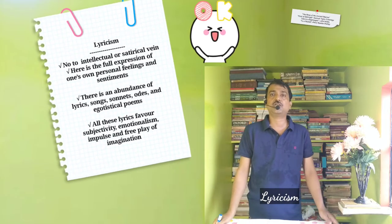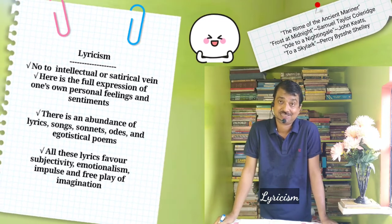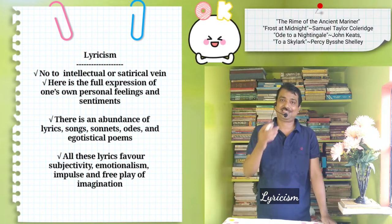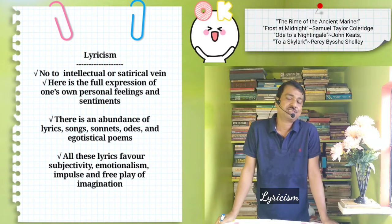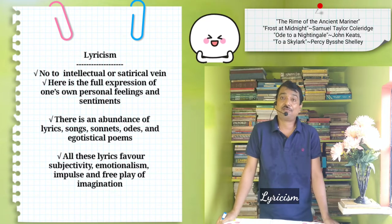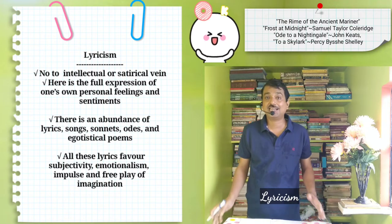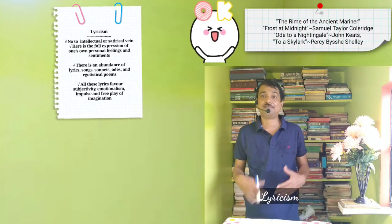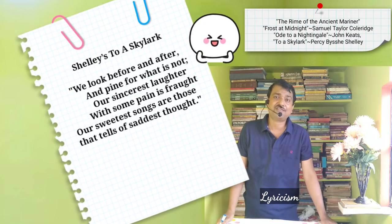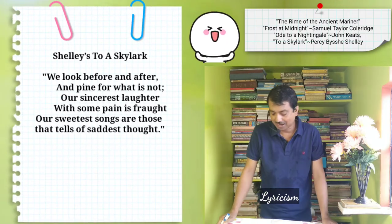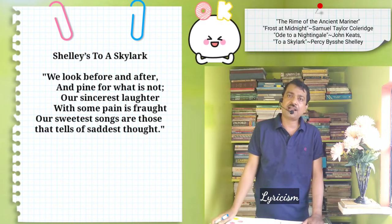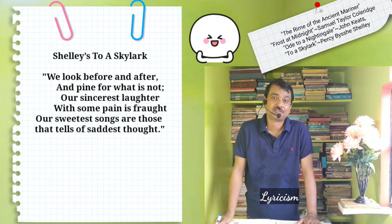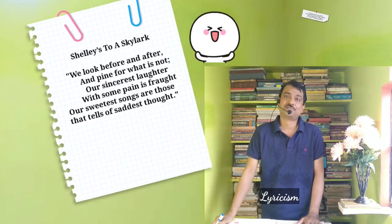Lyricism, rather than intellectual or satirical writing, is the basic preoccupation of Romantic poetry. There is full expression of one's own personal feelings and sentiments towards an object. As such, there is an abundance of lyrics, songs, sonnets, odes, and egotistical poems in Romantic poetry. Wordsworth, Coleridge, Shelley, Keats, and Byron are all famous lyric poets. All these lyrics favour subjectivity, emotionalism, impulse, and the play of imagination. Such intensity of feelings can be read in Shelley's To a Skylark: We look before and after and pine for what is not. Our sincerest laughter with some pain is fraught; our sweetest songs are those that tell of saddest thoughts.